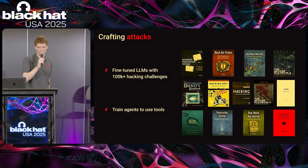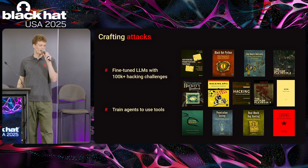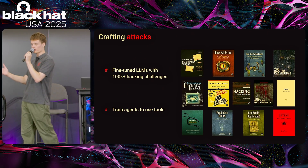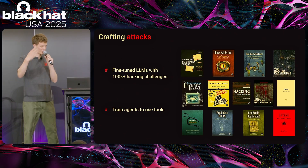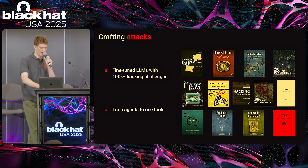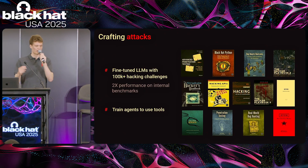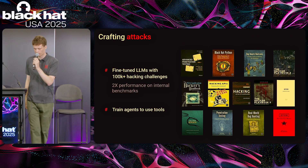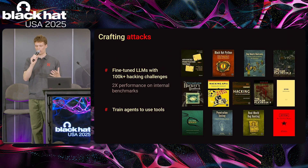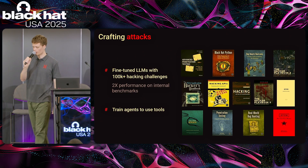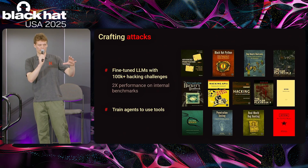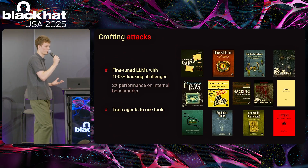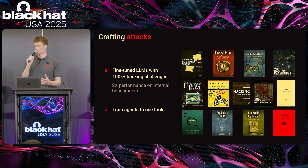The next part is crafting attacks. At Hadrian we run our own fine-tuned LLMs, fine-tuned with more than 100,000 hacking challenges. Some examples come from books that hackers use to learn how to hack. By distilling knowledge from these books and using them to fine-tune LLMs, we see more than 2x performance on our internal benchmarks. We're unlocking nascent knowledge inside these models about how to hack, as well as adding new knowledge. Another important part is building tools — we work with our hackers to build tools that LLMs can use, whether that's using a browser and clicking around, filling text fields, brute forcing, or observing network logs.